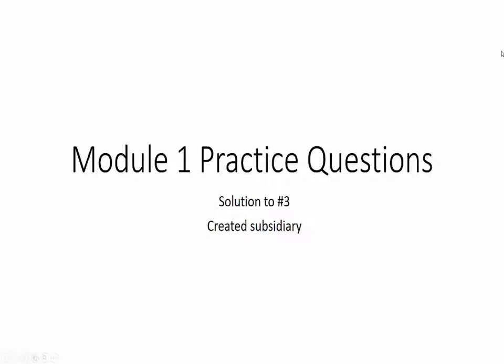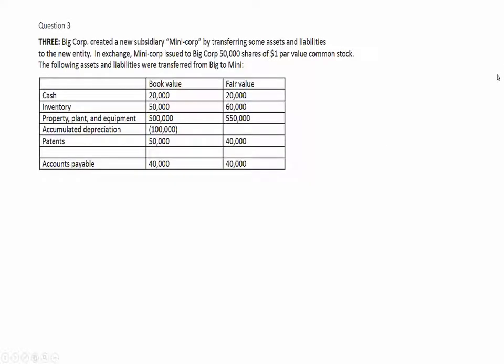The solution to the third and final question from the Module 1 Homework. This involves the creation of a subsidiary. We have Big Corporation creating a new subsidiary, Minicorp, by transferring some assets and liabilities to the new entity.